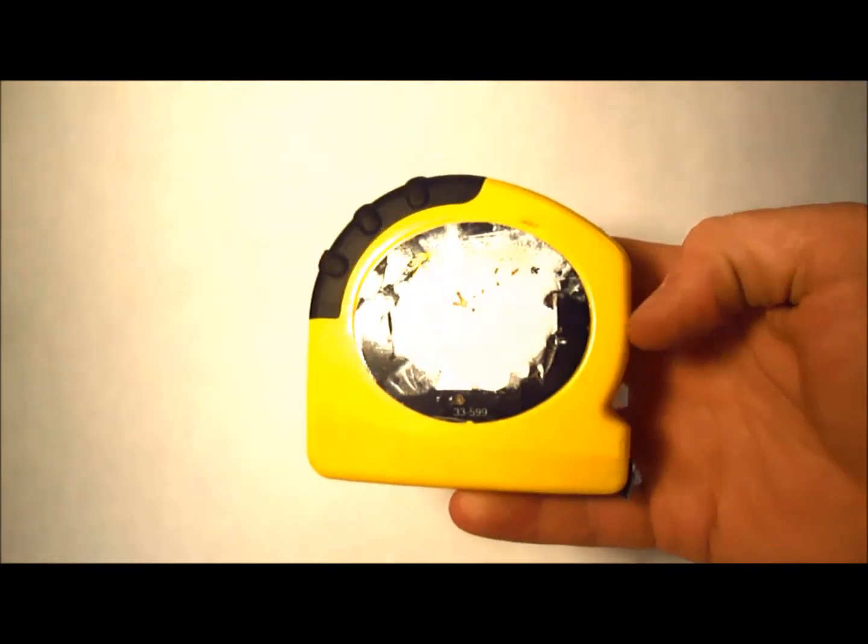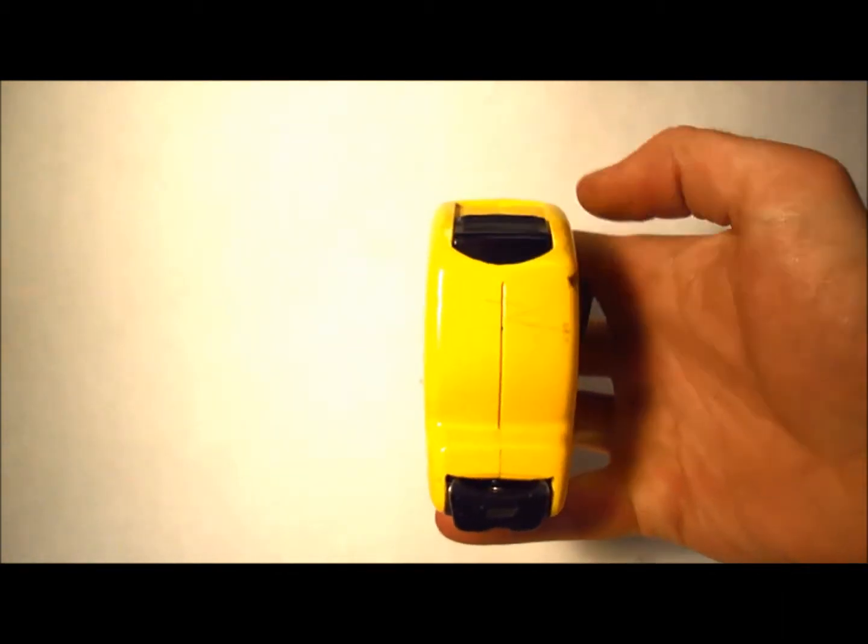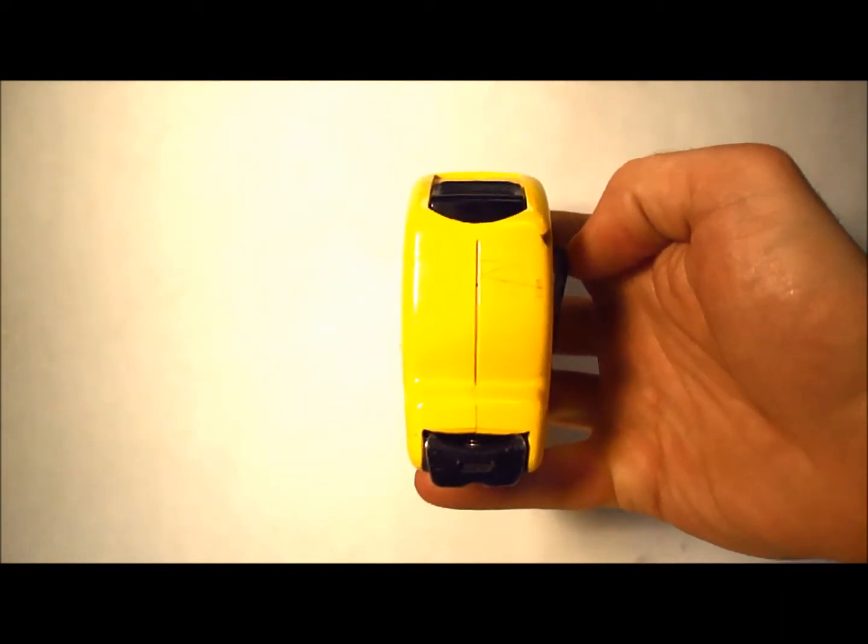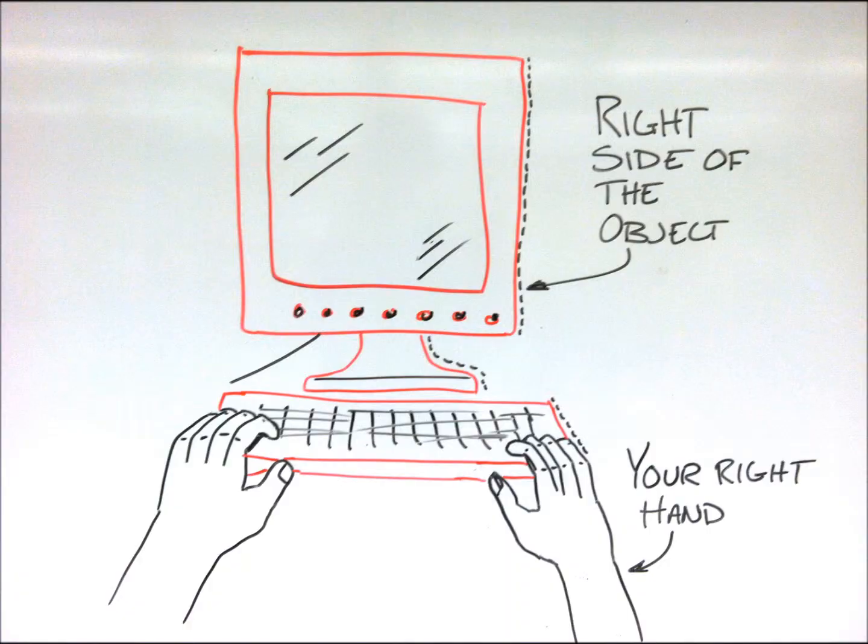The way we make this rotation is important, so let's see it again. This is always the way we rotate an object to see its right side view. Remember that for drawing purposes, the right side of the object is the side that's on your right when you look at the object.